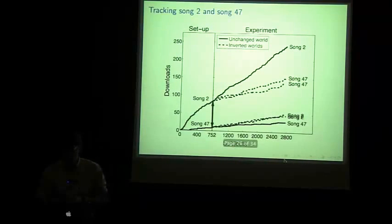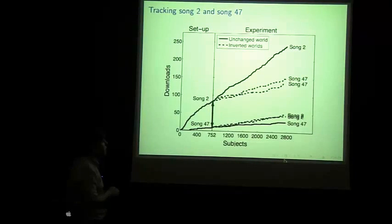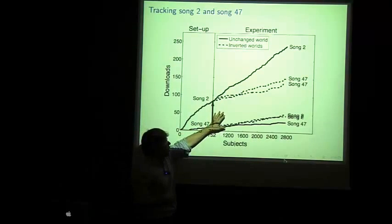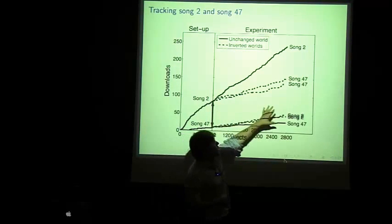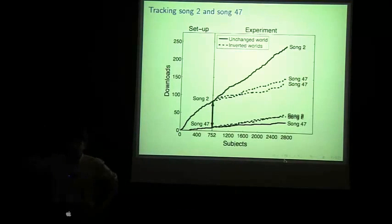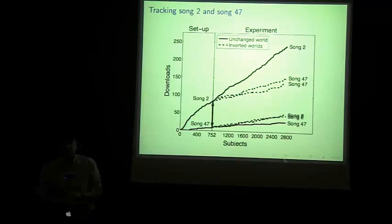Let's now look at song 2 and song 47. And here, we see a very different story. It looks to be the case that if we project this out, once song 47 was placed in song 2 spot, it got more listens and more downloads. And so, this initial change was able to lock in and become self-sustaining.